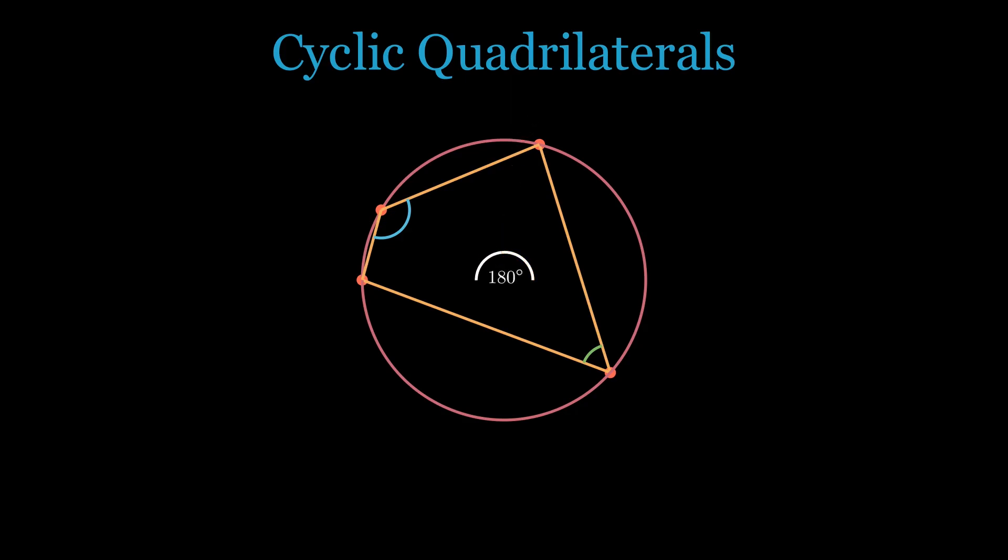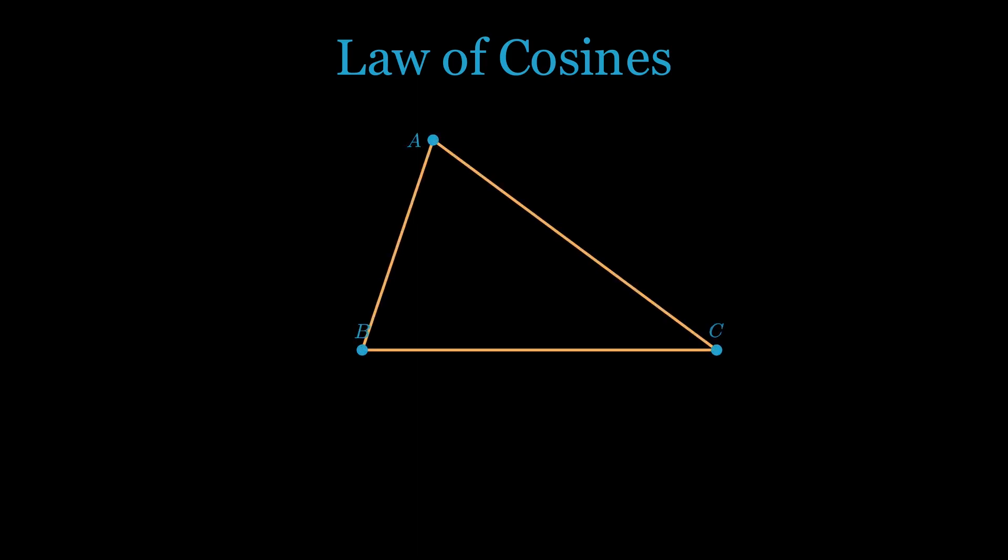The second fact we'll need is called the law of cosines. You should remember this from high school, but if not, just note that it gives us the following result relating sides of the triangle and the cosine of one of the angles.